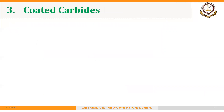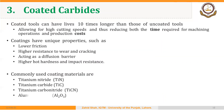Coated carbides can be produced by coating carbides to further increase hardness and other properties. Generally, coated carbides have lives ten times longer than uncoated ones. Coating allows even higher cutting speeds, higher material removal rates, higher productivity, and reduced production costs. Coatings reduce friction between the cutter and workpiece, provide higher resistance to wear and cracking, act as a diffusion barrier preventing workpiece material from diffusing into the cutting edge surface, and also achieve higher hot hardness and impact resistance.